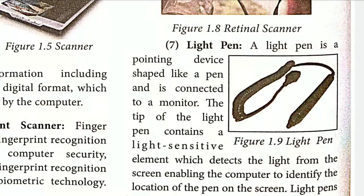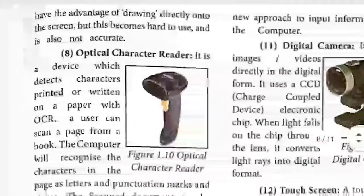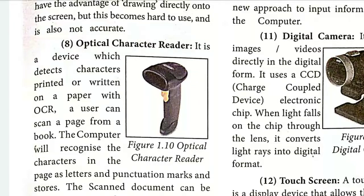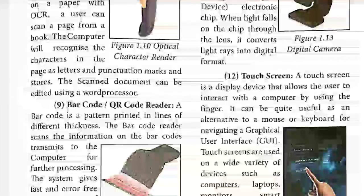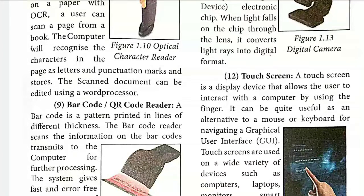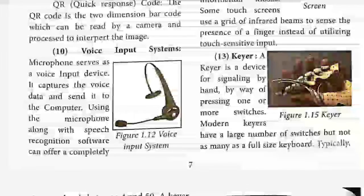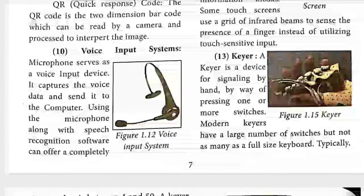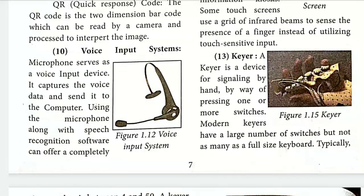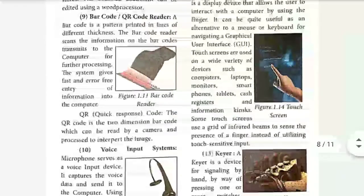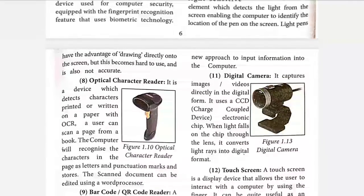Next is the optical character reader or barcode scanner. This is like a barcode scanner — both are essentially the same. These are available in all supermarkets. Next is the microphone — a voice input system with headphones and mic — which records voice information. Next is the digital camera, used to capture images or video.